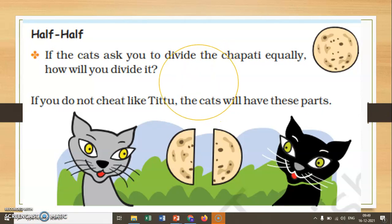Then we will fold the chapati into two parts like this. When we fold the chapati, we will get the exact half of it. Then we can break the chapati and give it back to the cats.